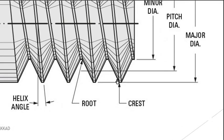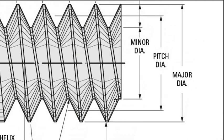Next, I am going to discuss the major diameter. Major diameter is the maximum diameter in the screw thread. This major diameter is also known as the nominal diameter.